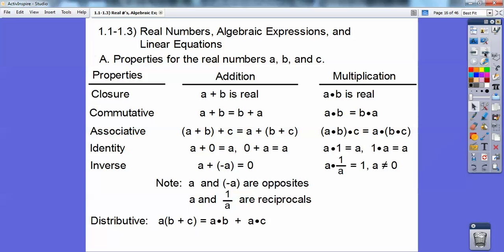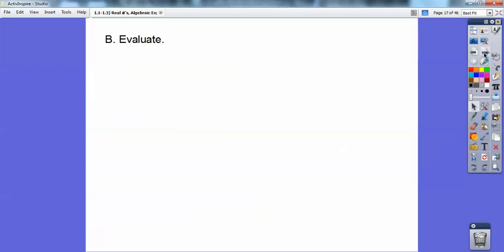And then lastly, this one's used a lot, the distributive property, a times the quantity b plus c. You guys have done this. Remember this from algebra, a times b plus this sign right here, a times c. So they'll ask you probably some properties to tell you what property just happened.